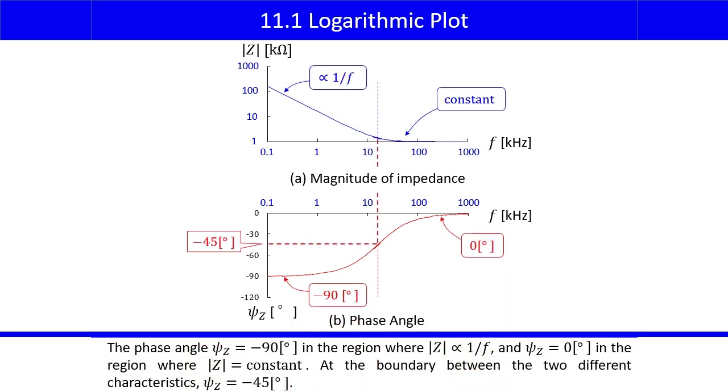The phase angle psi Z equals negative 90 degrees in the region where the magnitude of Z is inversely proportional to f, and psi Z equals 0 degrees in the region where the magnitude of Z is constant. At the boundary between the two different characteristics, psi Z equals negative 45 degrees.